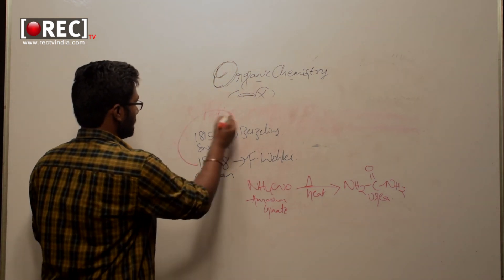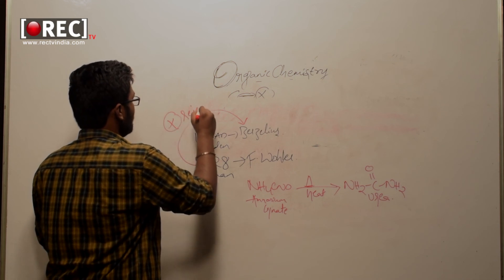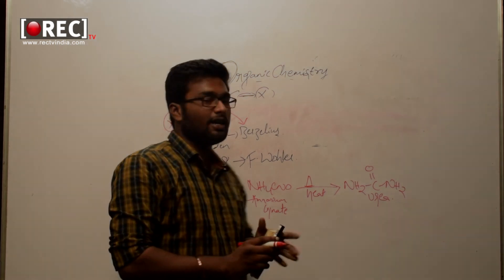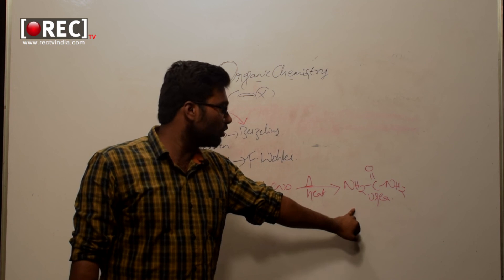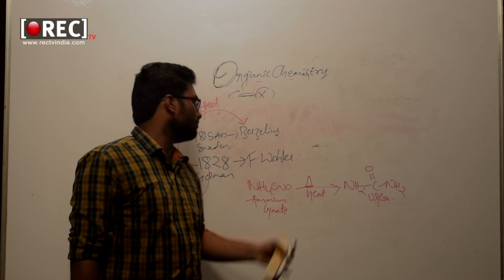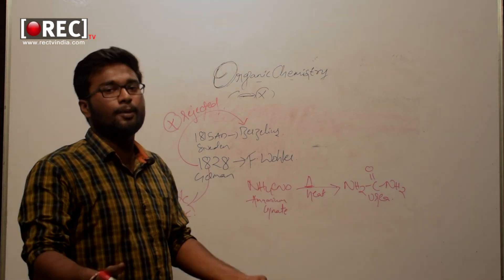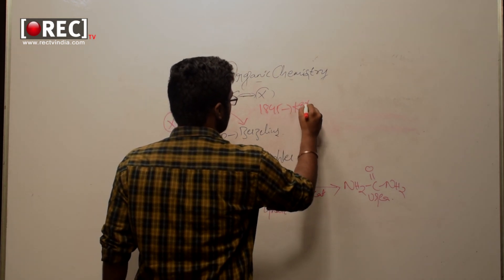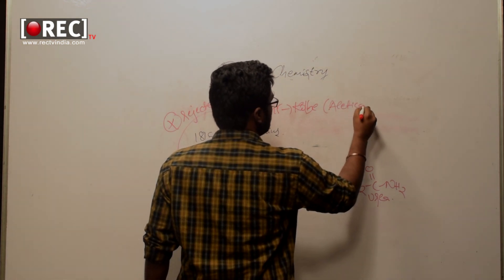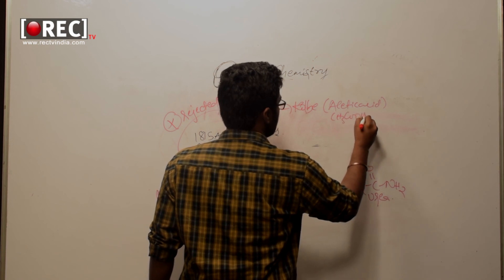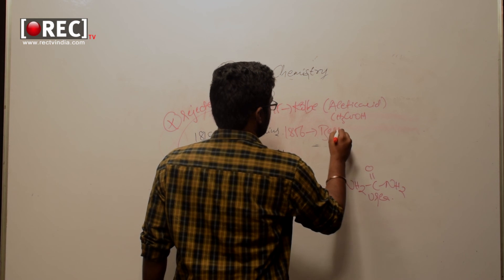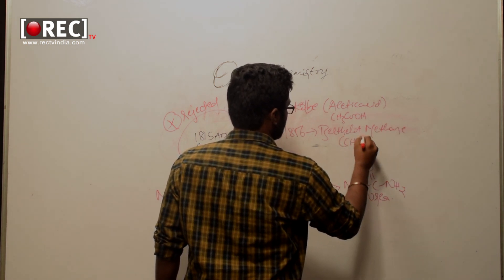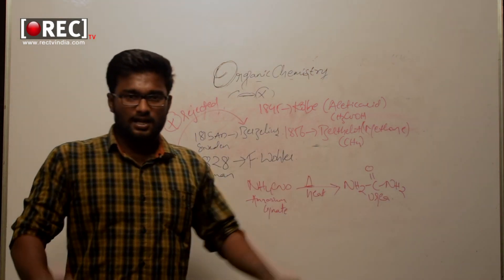So in 1828 AD, Berzelius's vital force theory was rejected, and in 1828 AD itself, Frederick Wöhler got the Nobel Prize in Chemistry. An important point to remember: urea was the first ever organic compound to be prepared in the laboratory. Soon after this path-breaking preparation, there were many more preparations made by scientists — according to our NCERT textbook, in 1845, Kolbe prepared acetic acid (CH₃COOH). This is a brief recap of the general introduction of organic chemistry.